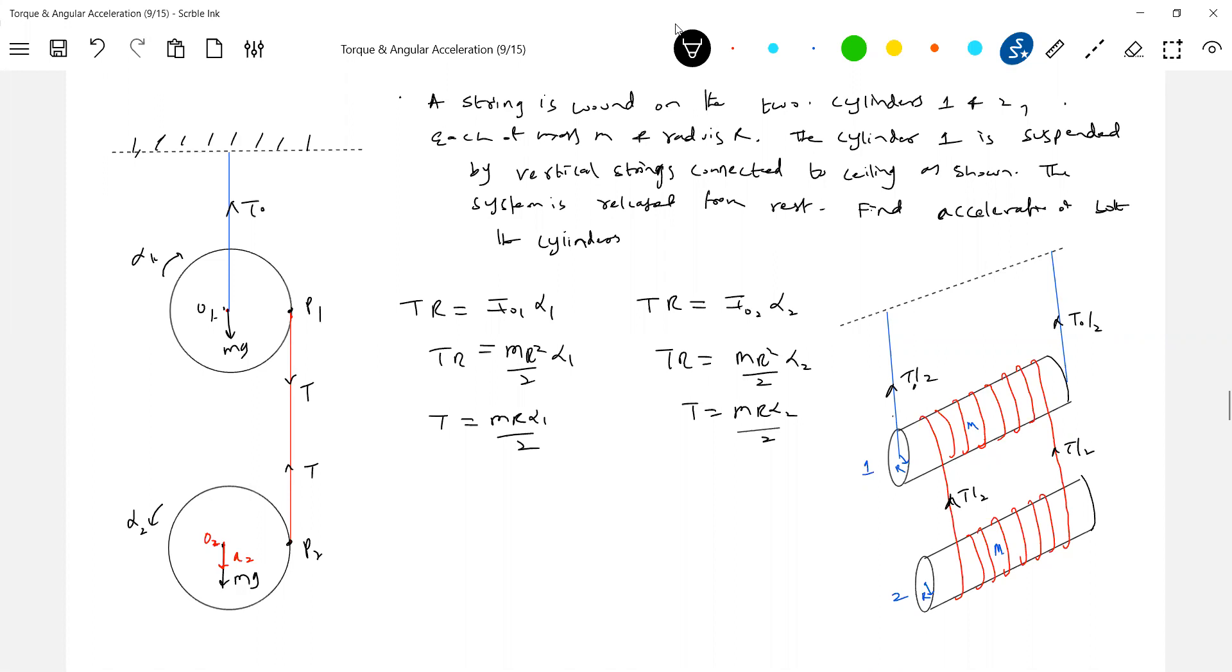But sir, point O is accelerating. Why are you not taking pseudo forces? Go back to the concept—if the center of mass is accelerating, can you define torque about it? Yes, but sir, why are you not taking torque due to pseudo force? You take symmetric points; symmetric elements will be there. The net torque on that will be zero. So what will be the torque set up due to pseudo force acting due to acceleration of center of mass? Net torque about O will be zero.